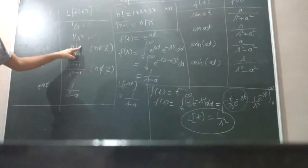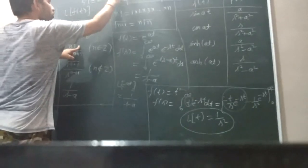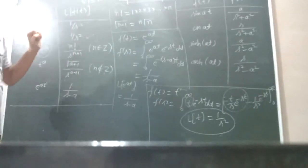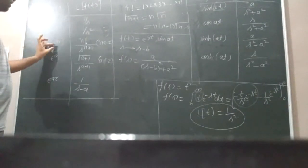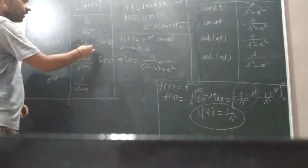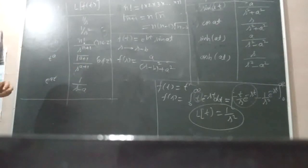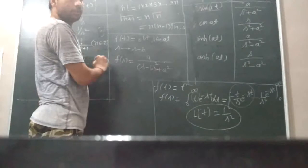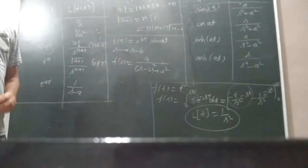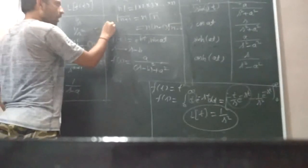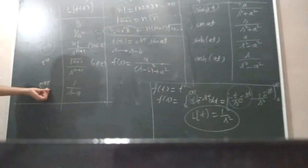Note that n should be an integer for the factorial form: n factorial upon s to the power (n plus 1). If n is a fraction or non-integer, we use the gamma function form: gamma(a plus 1) upon s to the power (a plus 1). The gamma function is defined as gamma(n plus 1) equals n times gamma(n), which we can extend as n times gamma(n minus 1) times gamma(n minus 2) and so on. Notably, gamma of one-half equals root pi.